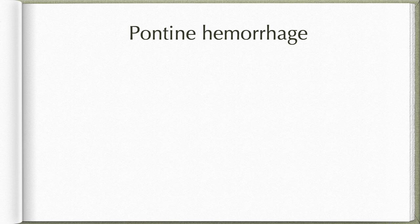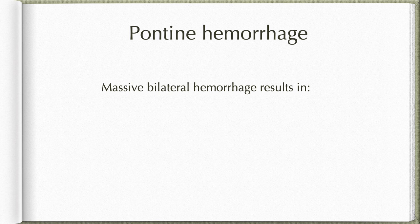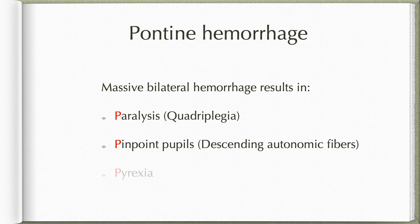In massive pontine hemorrhage, especially when it involves bilateral sites, the patient presents with triple-P features: paralysis (quadriplegia), pinpoint pupils due to involvement of descending autonomic fibers, and pyrexia — that is, malignant hyperthermia. When a patient presents with quadriplegia, pinpoint pupils, and malignant hyperthermia, suspect a massive pontine hemorrhage.